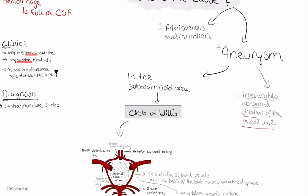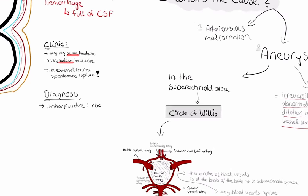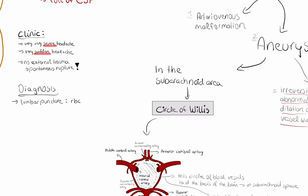If we have an aneurysm in the subarachnoid area, as we are talking about this type especially today, we will have aneurysm in the circle of Willis.